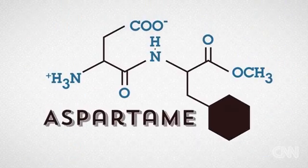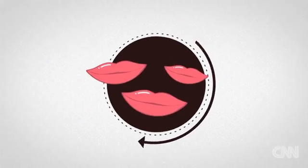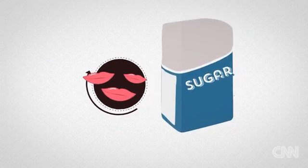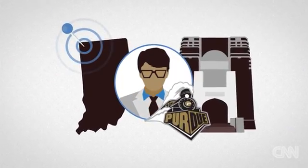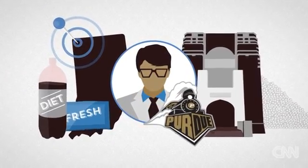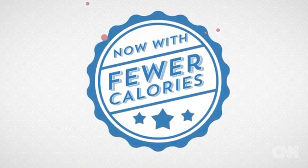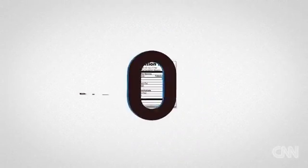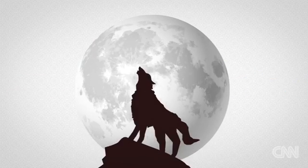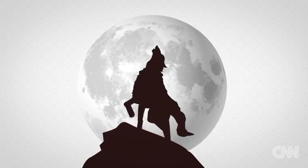Sweeteners such as aspartame actually trigger our body's taste receptors and trick them into believing it's sugar. So according to researchers at Purdue University, artificial sweeteners in diet sodas fulfill your body's sensory cravings for sweets, and as advertised, they don't deliver the calories. But this is the problem: diet sodas are actually crying wolf to your body.